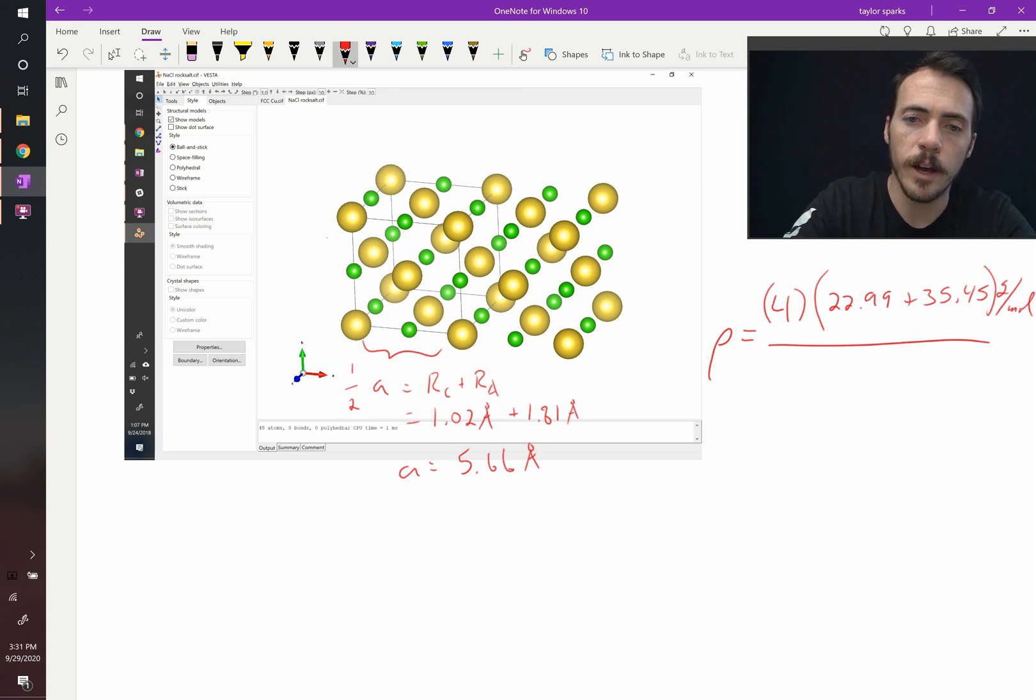We're going to divide this by 5.66 times 10 to the negative 8 centimeters, converting angstroms to centimeters. We're going to cube that because we need a volume and multiply it by Avogadro's number. 6.023 times 10 to the 23, and that's per mole.